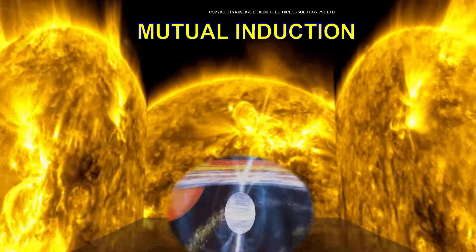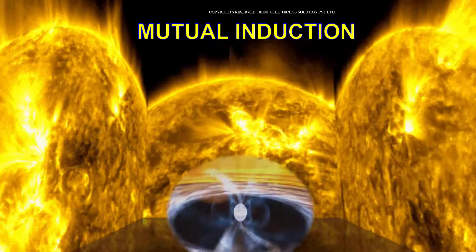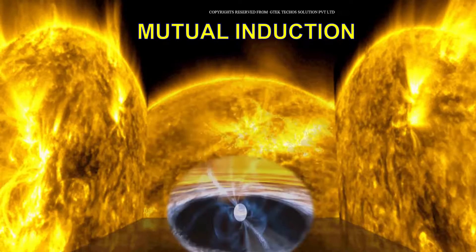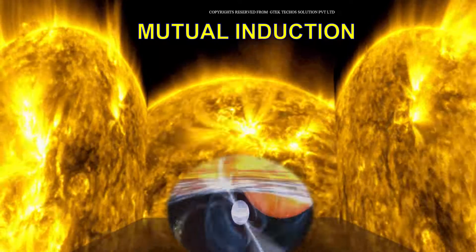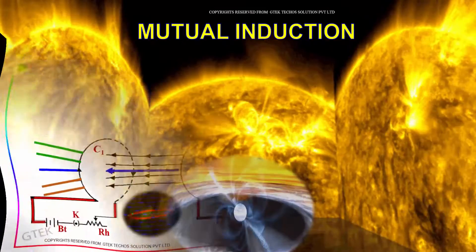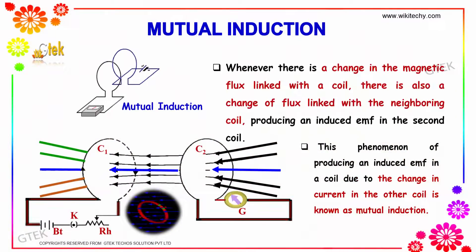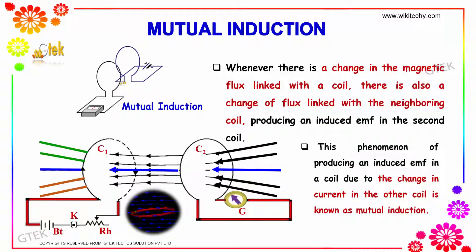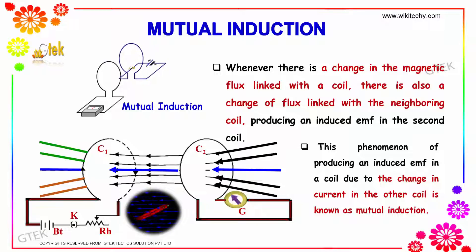Let's talk about mutual induction. It's one of the interesting areas where we'll be using a couple of coils. Whenever there is a change in the magnetic flux linked with a coil, there is also a change of flux linked with the neighboring coil, producing an induced EMF in the second coil.